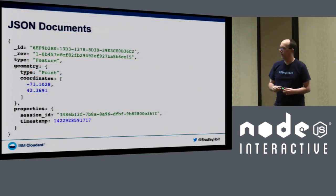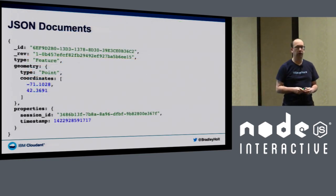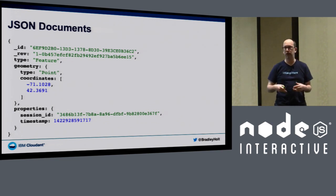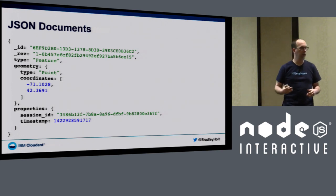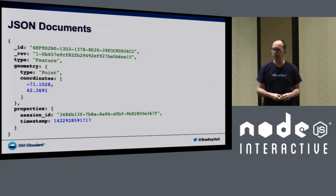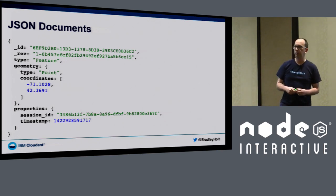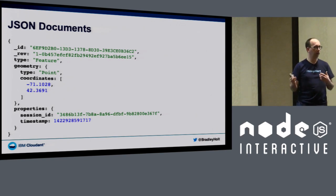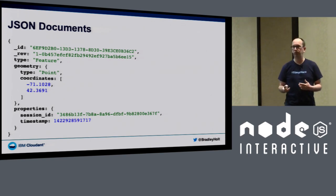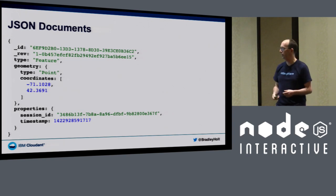PouchDB stores data in JSON documents — a JSON object with a couple of special fields. The `_id` field is the primary key that uniquely identifies every document. The `_rev` field is the revision field, which enables optimistic concurrency — it allows PouchDB to avoid ever locking the database by allowing optimistic concurrent updates to documents.